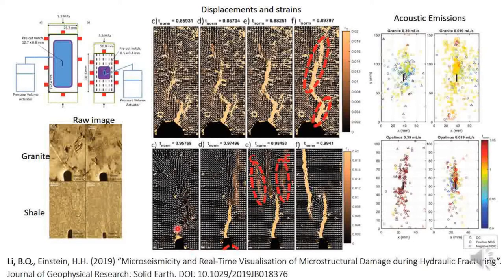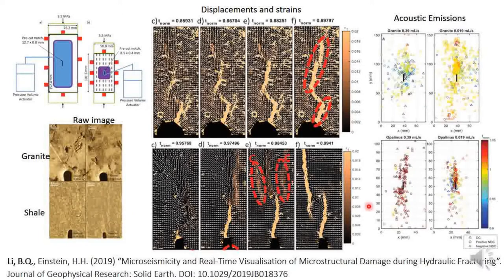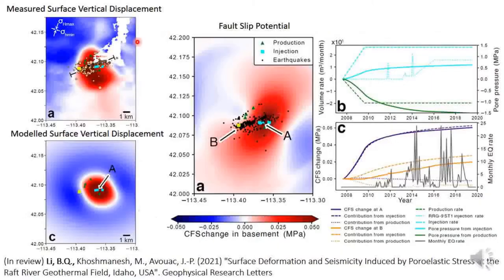For the opalinus clay shale we see that the microcracks are propagating in a more classic tensile fracture orientation where the cracks are parallel to the maximum principal stress. Again this is reflected in the acoustic emissions shown in the bottom right two panels here, where we see a larger proportion of non-double-couple events — that is, we have more so the formation of micro tensile cracks.